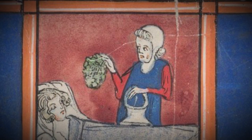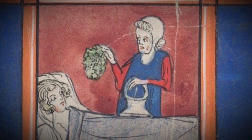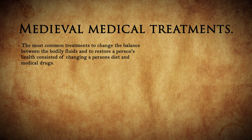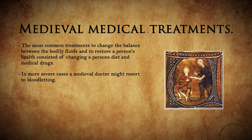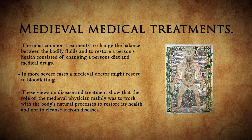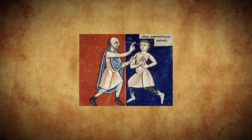Ideally a physician should closely monitor the patient's activities over an extended period of time, something which was only realistic for physicians who were employed by a wealthy patron. When it came to treatments, various techniques were available to achieve a balance between the fluids, such as changing a person's diet, medical drugs, and if heroic treatment seemed to be called for, it was possible to eliminate excess fluids by bloodletting. These views on disease and treatment show that the perceived role of the physician in the Middle Ages was not to cleanse the body from disease, but rather to preventively work with the body's natural processes in order to help it restore its health. However, sometimes more drastic measures were needed, and in that case a patient usually needed to take help from a surgeon.